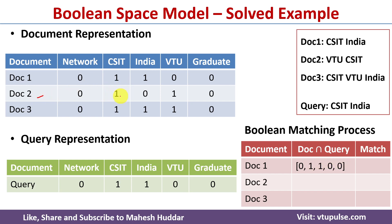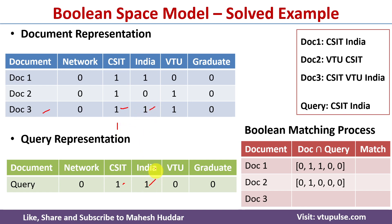For Document 2, csit is 1 in both the document and the query so we get 1; vtu is 1 in Document 2 but 0 in the query so we get 0. The final logical AND result for Document 2 is 0 1 0 0 0. For Document 3, csit is 1 in both giving 1, india is 1 in both giving 1, and vtu is 1 in the document but 0 in the query giving 0. The final logical AND result for Document 3 is 0 1 1 0 0.